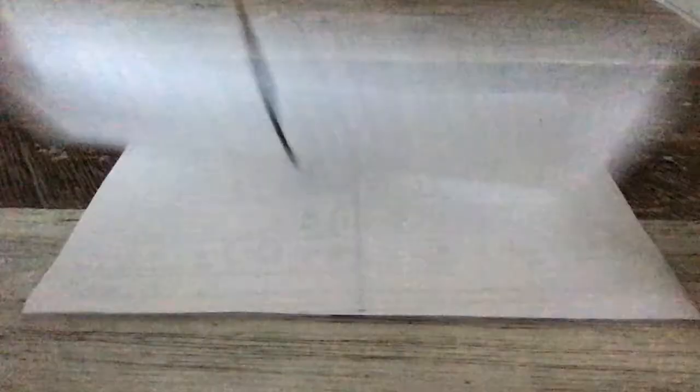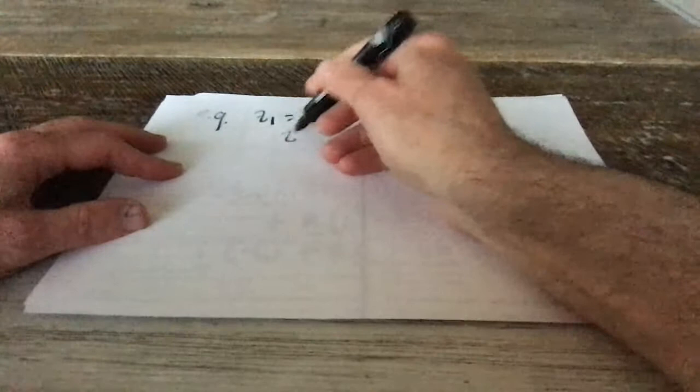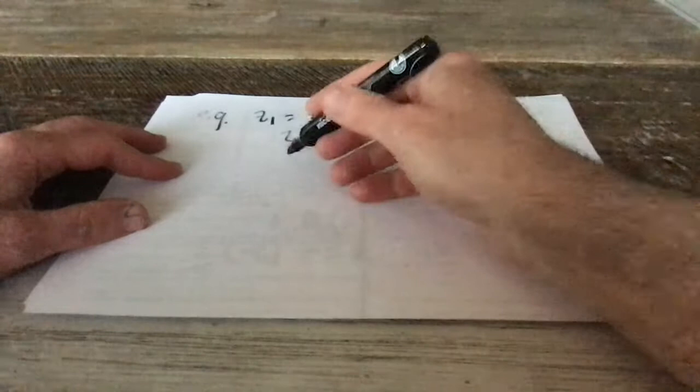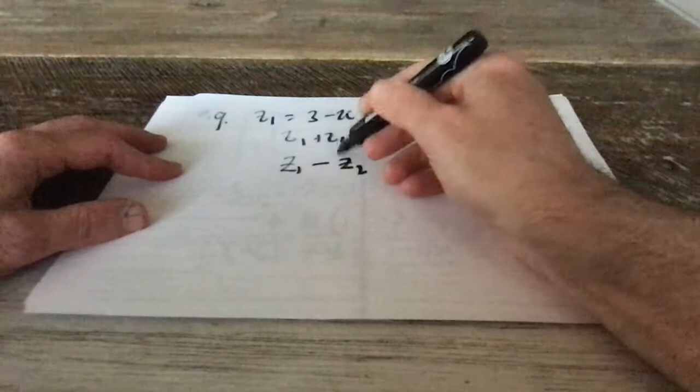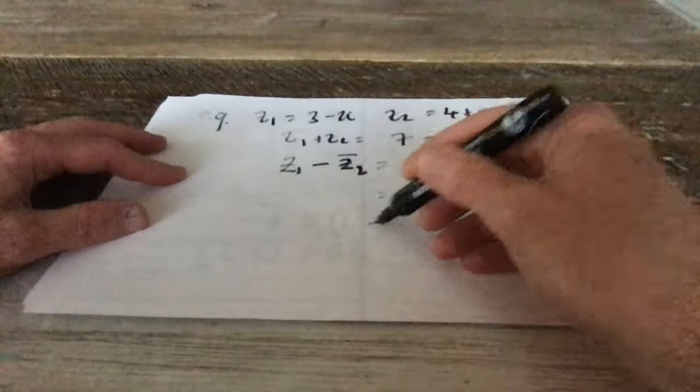Let me just do an example here. z1 is 3 minus 2i, z2 is equal to 4 plus i, z1 plus z2, I add the real parts, I get 7, minus 2 plus 1 is minus i. How about z1 minus z2 bar? Oh my god, this is so exciting. It's 3 minus 2i, minus z2 bar is 4 minus i. So, this is 3 minus 2i minus 4 plus i, add the real parts, minus 1, add the imaginary parts, minus i. Or subtract the imaginary parts, whichever you want to do.